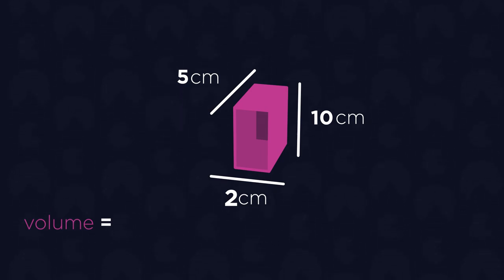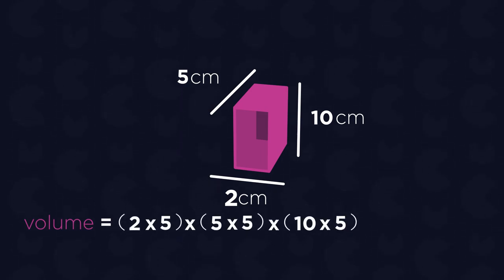We could work this out by calculating the enlarged lengths of each side and then multiplying them together. So 2 times 5, times 5 times 5, times 10 times 5, which equals 12,500cm cubed.